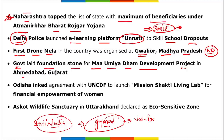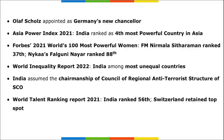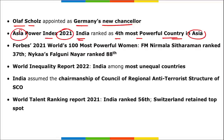Government laid the foundation stone for Maa Umiya Dham development project in Ahmedabad, Gujarat. Odisha inked an agreement with UNCDF to launch Mission Shakti Living Lab for financial empowerment of women. Askot Wildlife Sanctuary in Uttarakhand was declared as an eco-sensitive zone. Olaf Scholz was appointed as Germany's new Chancellor.